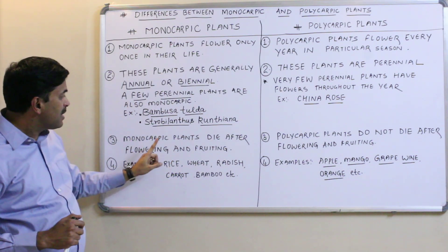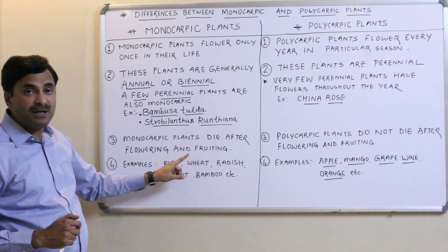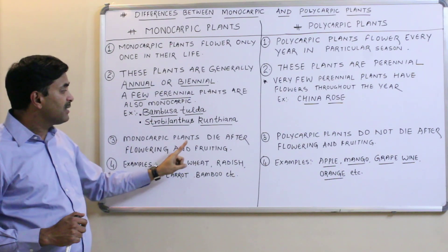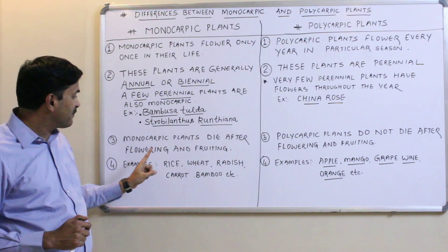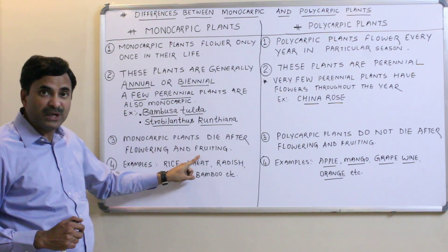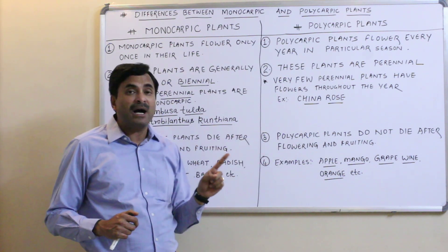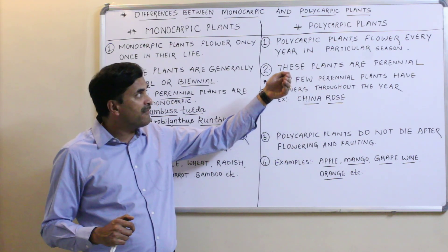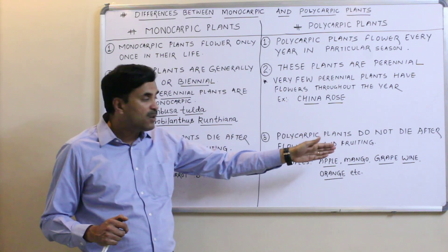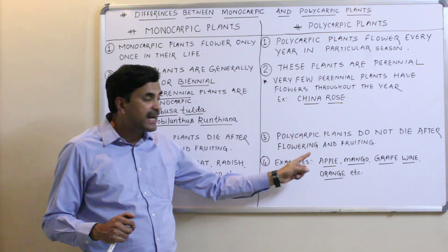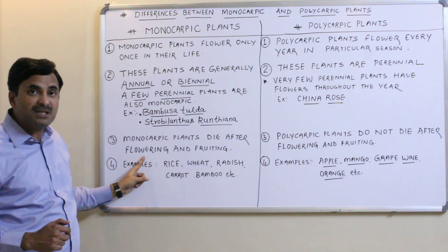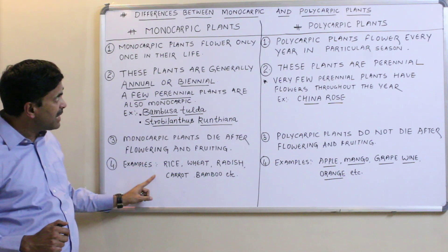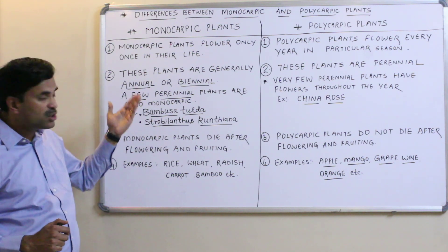The third point: monocarpic plants die after flowering and fruiting. Monocarpic plants flower only once and then die. Polycarpic plants do not die after flowering and fruiting because they successively produce flowers and fruits every year. So polycarpic plants will not die after flowering and fruiting, while monocarpic plants will.